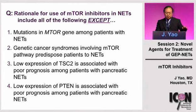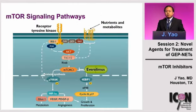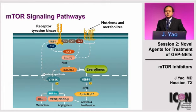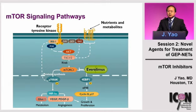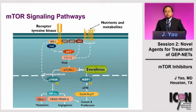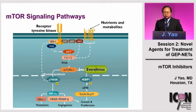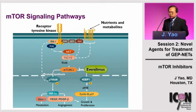Most people voted for option one. mTOR — mechanistic target of rapamycin — is an evolutionarily conserved serine/threonine kinase that we inherit all the way back to single-cellular organisms. In single-cellular organisms, TOR mostly responds to nutrient signaling. When there's abundant nutrient energy in the environment, the TOR pathway is turned on, leading to cell growth and proliferation and protein synthesis. Under starvation conditions, the TOR pathway is turned off, leading to autophagy, where the cell breaks down ribosomes for energy metabolism and enters a dormant state.